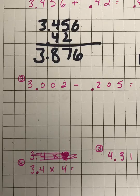For question three, same thing — just line up the decimal points. I'll use the one that's already up there. Subtract like normal and bring the decimal point straight down.